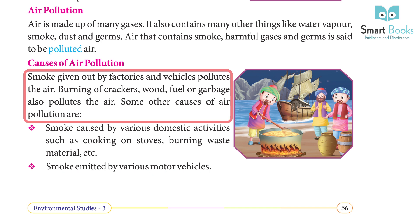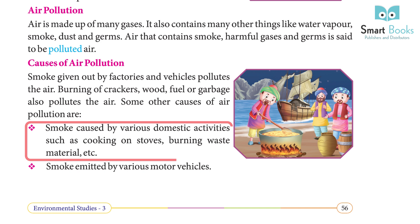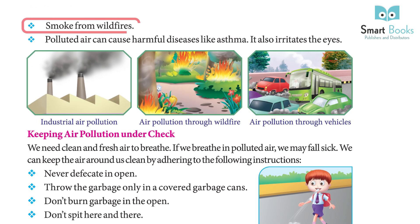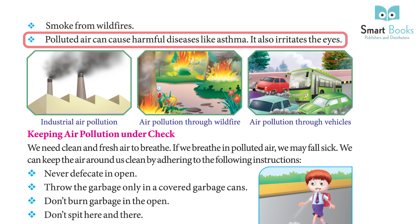Causes of air pollution: Smoke given out by factories and vehicles pollutes the air. Burning of crackers, wood fuel, or garbage also pollutes the air. Other causes include smoke from domestic activities such as cooking on stoves and burning waste material, smoke emitted by motor vehicles, and smoke from wildfires. Polluted air can cause harmful diseases like asthma and also irritates the eyes.